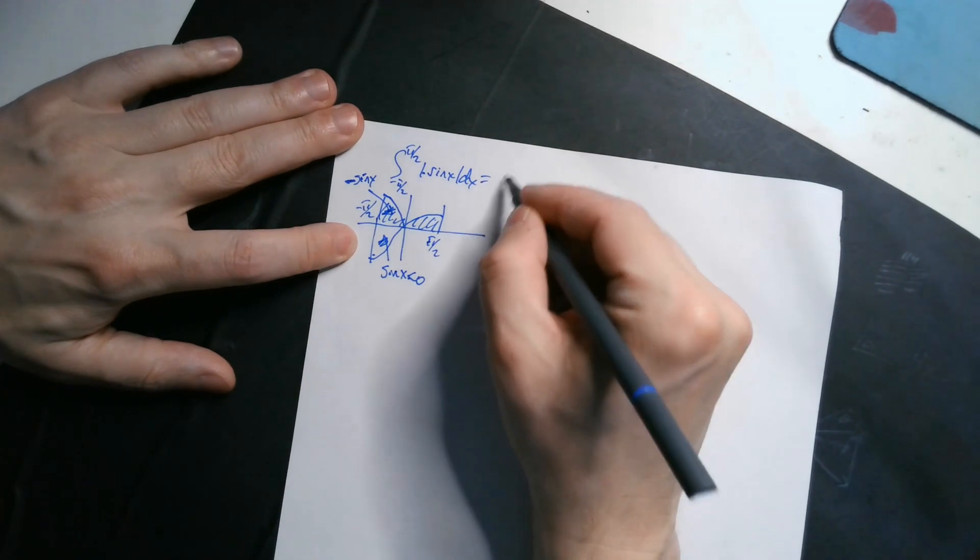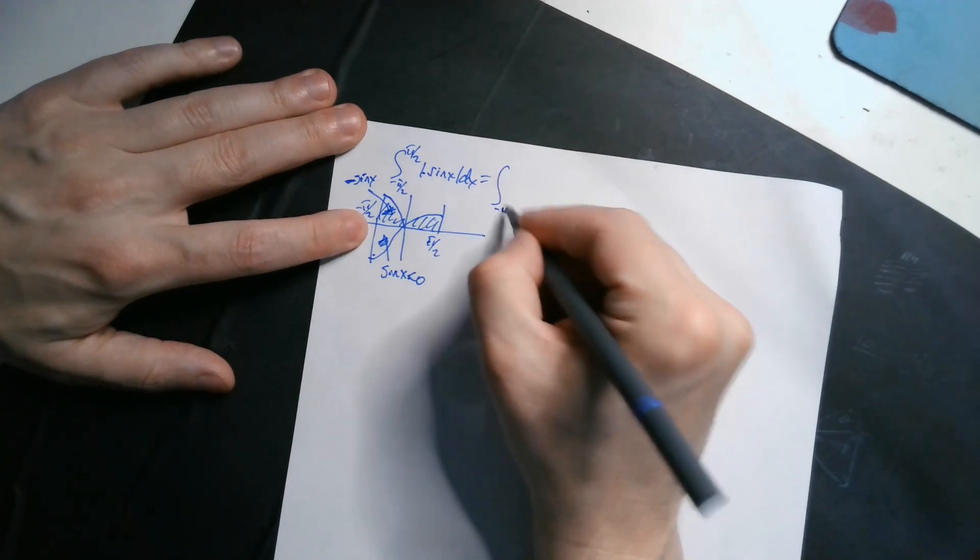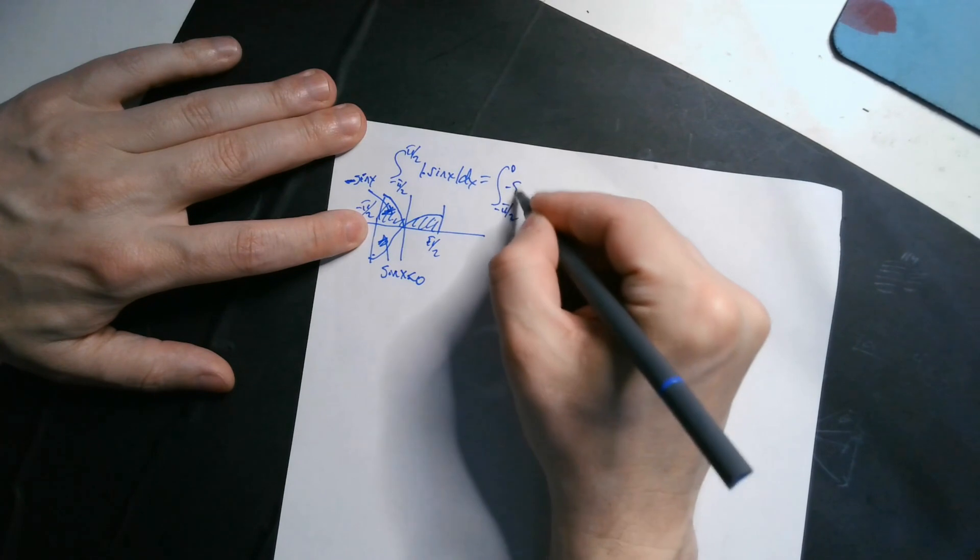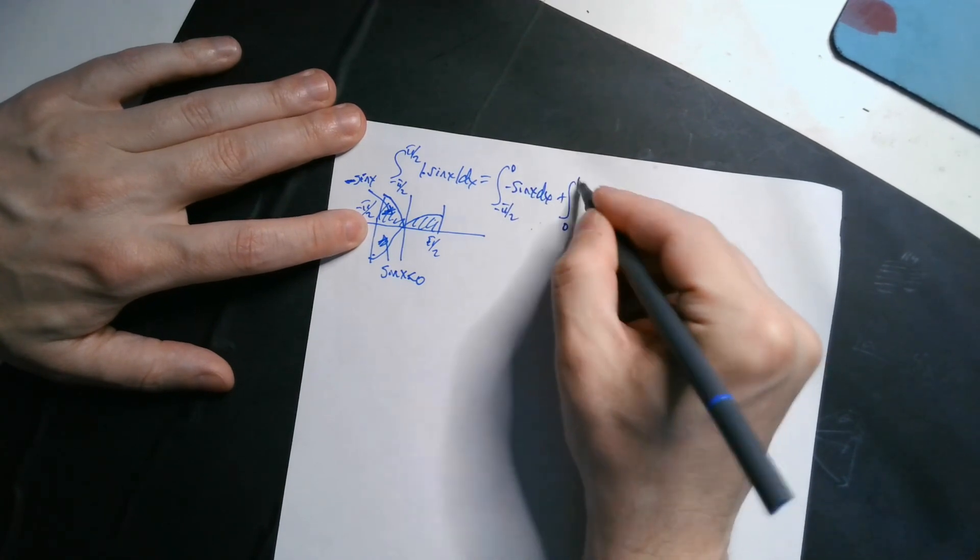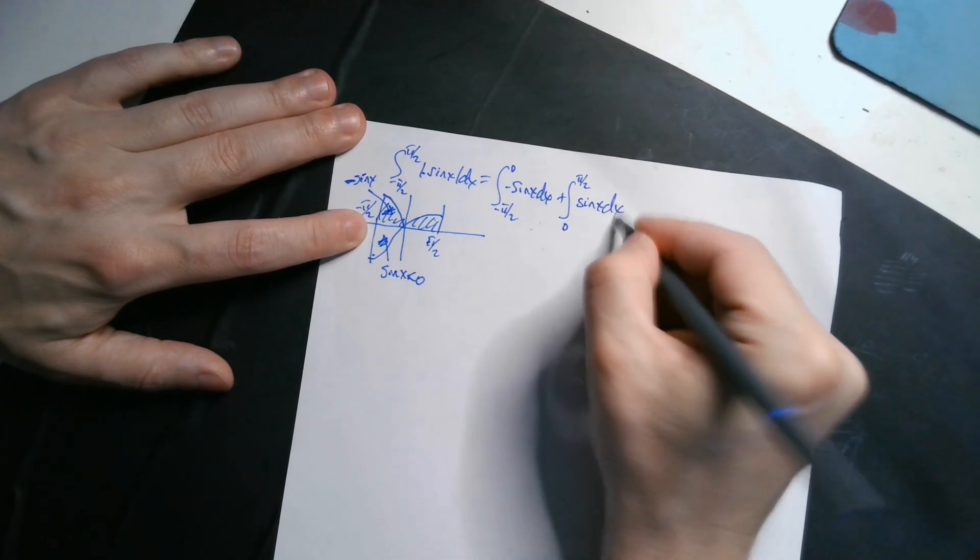Now you can just integrate as follows. You can break up the integral into two pieces, negative pi over 2 to 0, and then negative sine x dx, and then plus the integral from 0 to pi over 2, and then sine x dx.